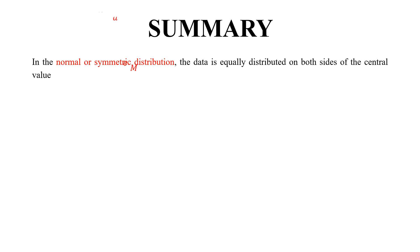So we can summarize the whole lecture as: In the normal or symmetrical distribution, the data is equally distributed on both sides of the central value. In this case, mean, median, and mode are the same or equal.